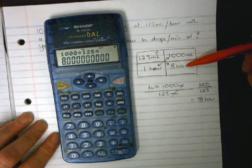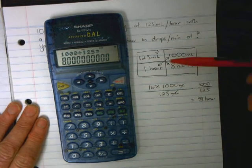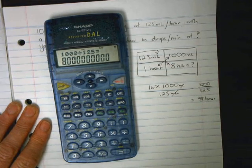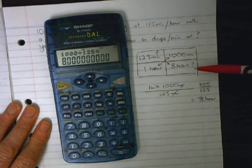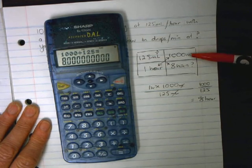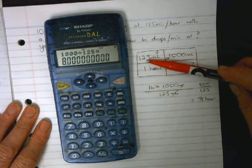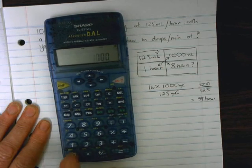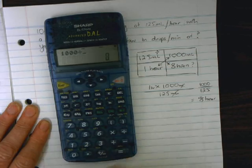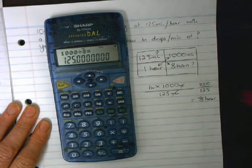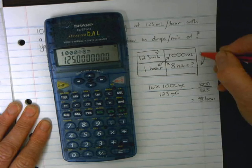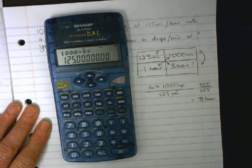Now 1000 mL over 8 hours is the same rate as 125 mL over 1 hour. How do we know that's true? How can we prove it? If we divide 8 into 1000, our answer will be 125. So we'll just prove it: 1000 divided by 8 equals 125.